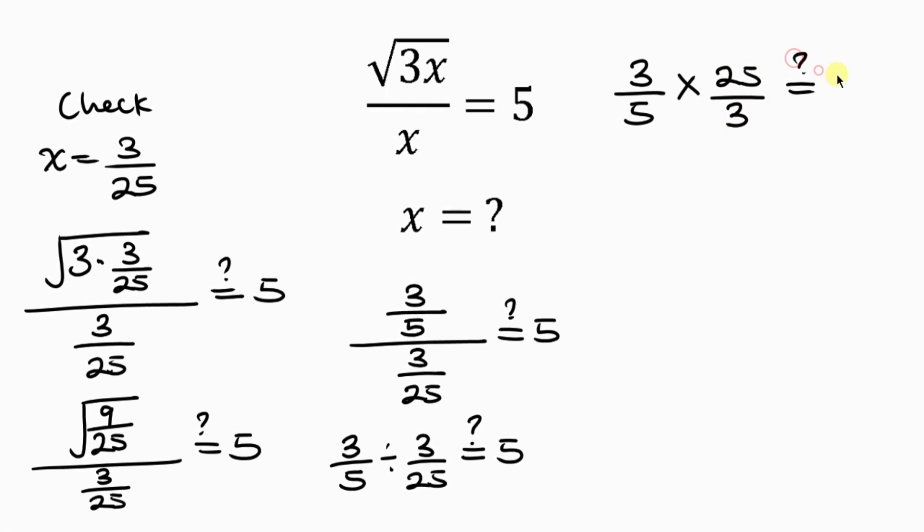Would this be equal to 5? 3 cancels out 3, 5 here, 1, 5 here, 5. So, we have 5 on the left, which is equal to the 5 on the right. So, our value for x equal to 3 over 25 is actually correct.